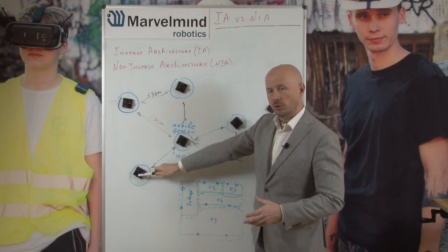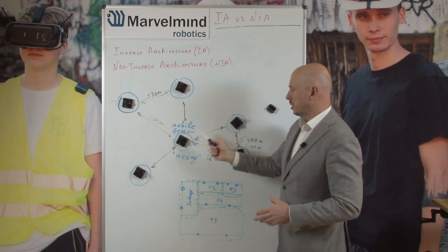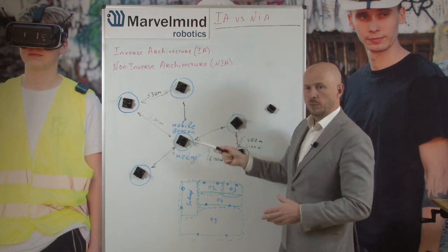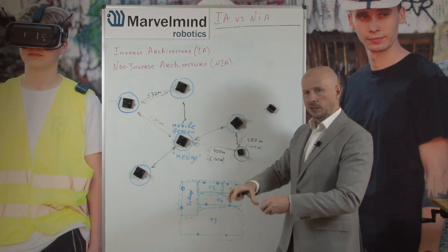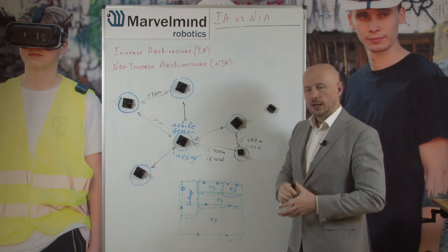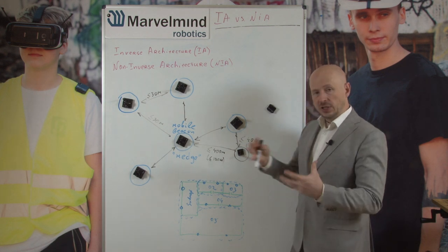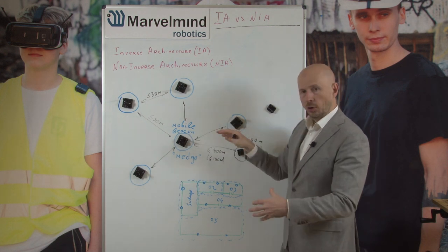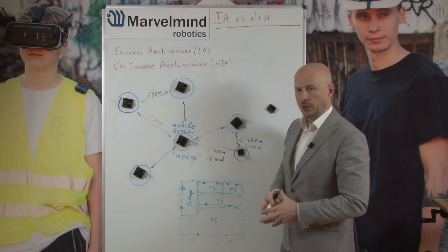For example, one beacon emits ultrasound and another receives it, and the distance between them is measured. The modem collects a table of distances in order to self-build the map of stationary beacons.